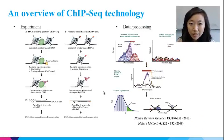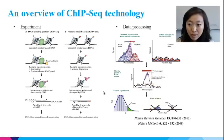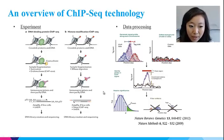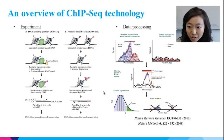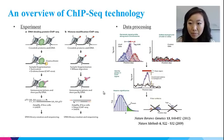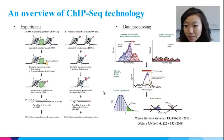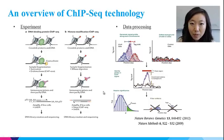Knowing how the CHIP-seq experiment is done is helpful to understand downstream data processing procedures. In the DNA binding CHIP-seq experiment, the DNA is first cross-linked to the DNA binding protein and then broken down by sonication or endonuclease digestion. The fragmented DNA bound by protein can be extracted by immunoprecipitation using the specific antibody targeting that protein.